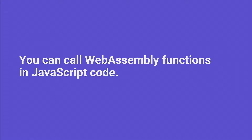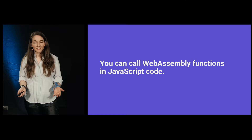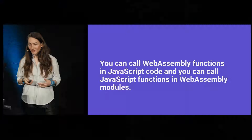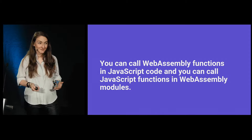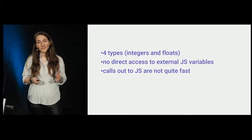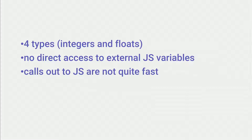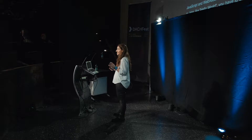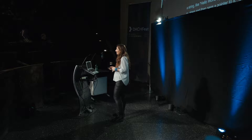You can think of WebAssembly binaries as regular app modules — the browser can fetch, download, and execute them. They have imports and exports that allow you to work with them the same way you work with JavaScript objects. You can call WebAssembly functions in JavaScript code, and you can call JavaScript functions in WebAssembly modules. However, WebAssembly has only four primitive types, and they are all numbers: integers and floats. This means that passing more complex data types between JavaScript and WebAssembly is not simple. If you want to pass a string like hello world, you have to encode it into an array of numbers and then pass a pointer to it. It has no direct access to external JS variables, so it can only read and write from its own linear memory — to access JS variables, you have to either copy them into memory or pass them through the call stack.